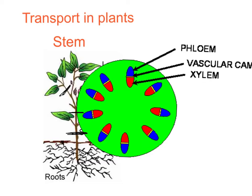Very often you get little greenfly living on stems. They go on the outside of the stem and use their proboscis — their sharp nose-like mouth part — to tap into the phloem. What greenflies do is tap into the phloem so they can drink the glucose solution, saving them from having to feed anywhere else. During the day they'll catch the glucose solution as it moves down, and at night time they'll catch it as it moves up through the phloem.